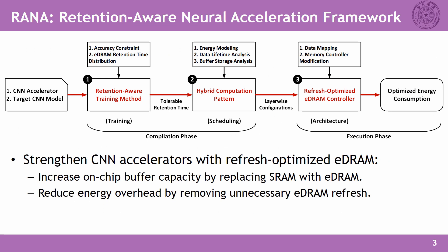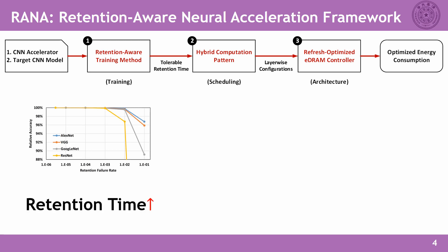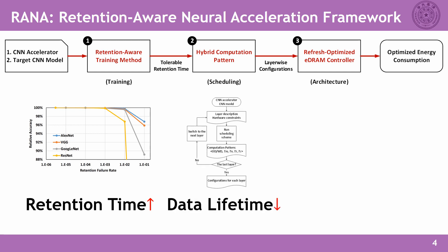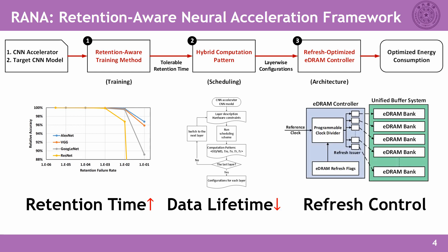We propose a framework that enhances neural network accelerators with refresh-optimized ED-RAM to save system energy consumption. It has three levels of techniques. First, a retention-aware training method is proposed to improve ED-RAM's tolerable retention time. Then, it schedules networks in a hybrid computation pattern to reduce data lifetime. Finally, a programmable ED-RAM controller is designed to enable the required fine-grained refresh controls.